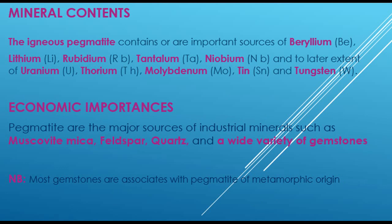The third and last part of today's lesson is the economic importance of igneous pegmatites. The economic importances of pegmatites are that they are major sources of industrial minerals such as muscovite mica, feldspar, quartz, and a wide variety of gemstones. Note that most gemstones are associated with pegmatites of metamorphic origin, which occur at high temperatures ranging from 250 to 700 degrees Celsius.